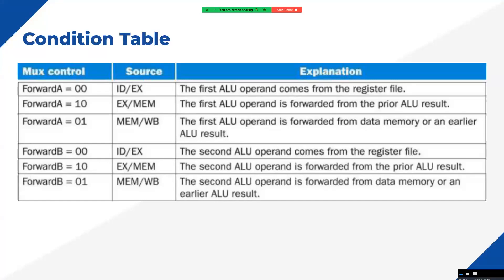This is basically the conditional table. As mentioned in the previous lecture, a new hardware was introduced — a 3-by-1 mux. It can also be a 4-by-1 mux, but we designed it as a 3-by-1 mux. For a 3-by-1 mux, the control or selection signal bits should be two bits. Here is the logic for that control signal: if I want to forward operand A, the control signal is named ForwardA.